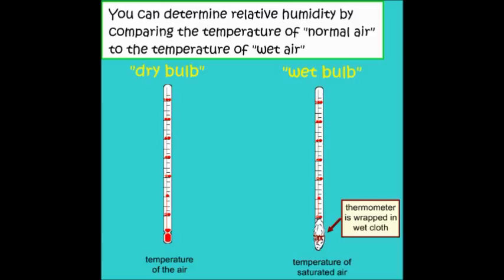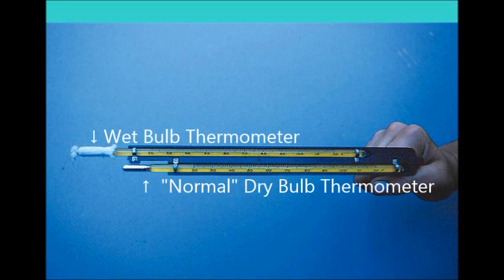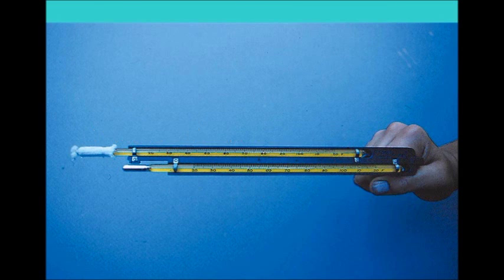And you do this by having one thermometer that's just normally measuring the temperature, and another that has a wet cloth wrapped around the end. That's referred to as the wet bulb. A sling psychrometer is just a device that has two thermometers. One thermometer is a normal thermometer, and the other was wrapped in a wet cloth.